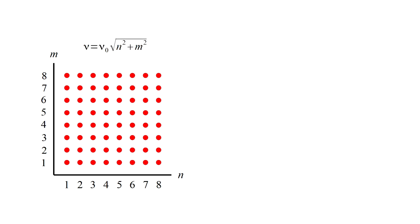The corresponding frequency is a fundamental frequency, nu zero, times the square root of n-squared plus m-squared. This is constant on a circle, so a range of frequencies corresponds to the area between two circles.